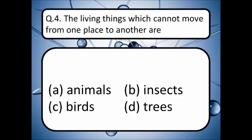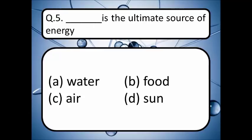The living things which cannot move from one place to another are — read your options: animals, insects, birds, or trees. Pick your correct answer and write it down in the comment box. The correct answer is option D — trees.